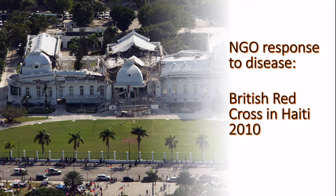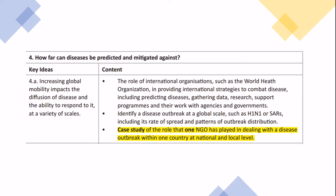In this video we're going to be looking at how an NGO responded to a disease, with the example of the British Red Cross in Haiti in 2010. This is for the OCR A-level spec on Disease Dilemmas, and the relevant part of the spec where we need this case study is highlighted.